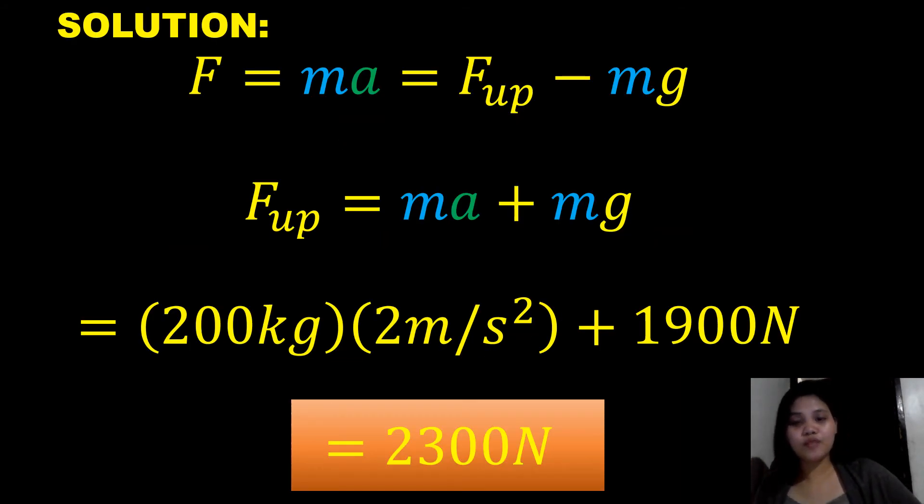Let's go to the formula which is F equals ma equals F upward minus mg. So F upward equals ma plus mg.